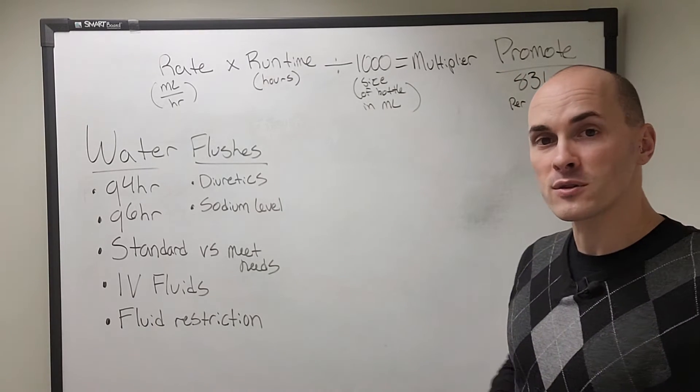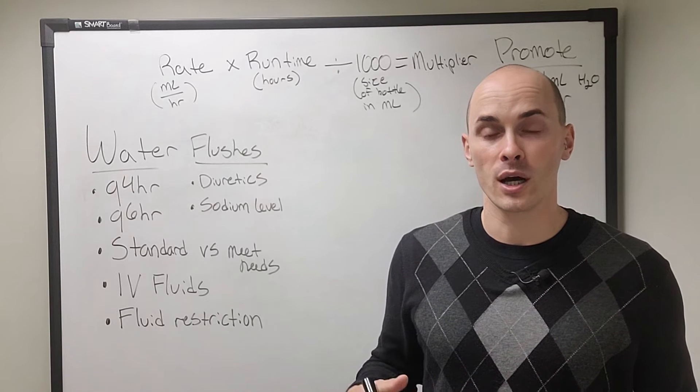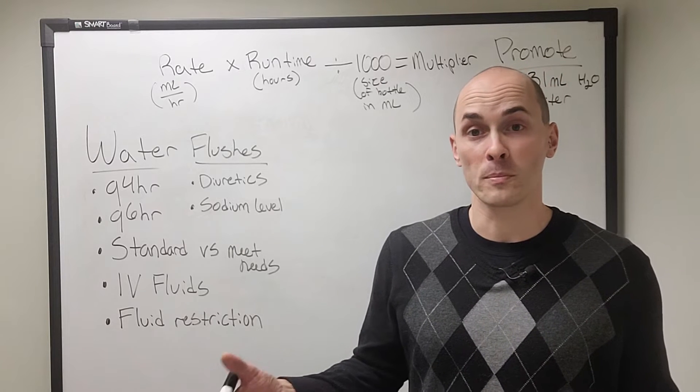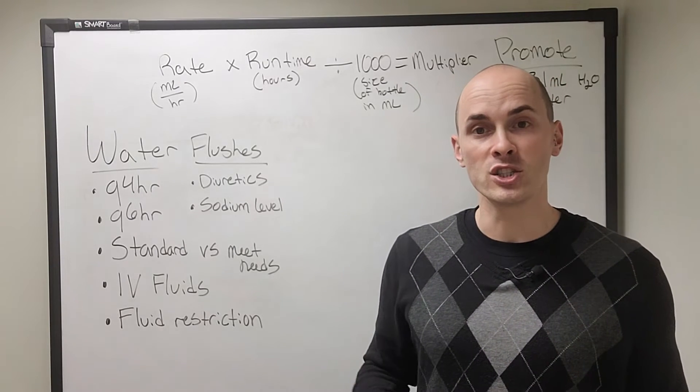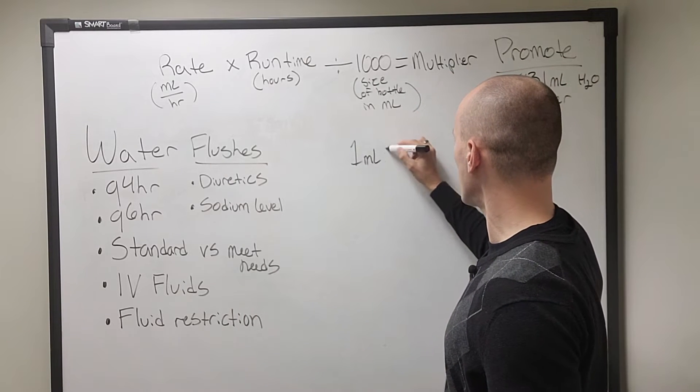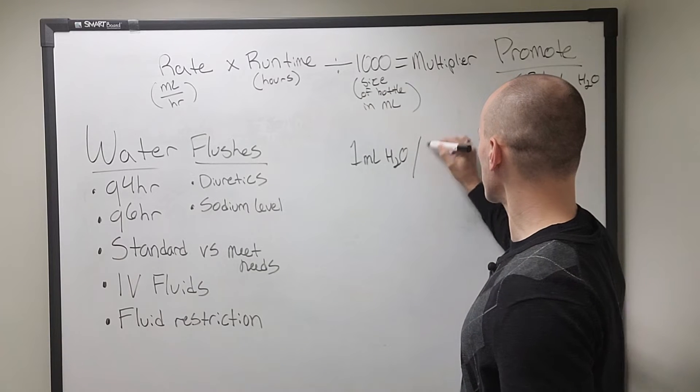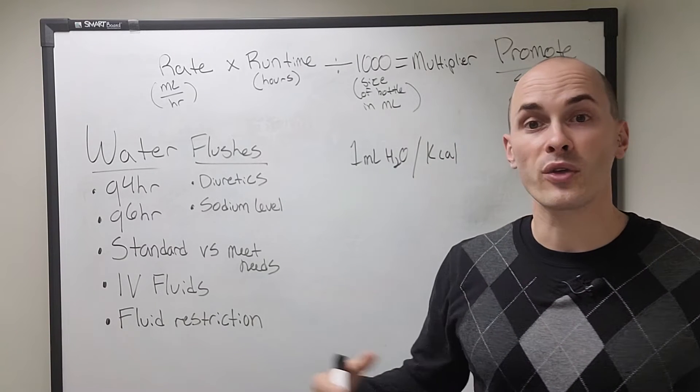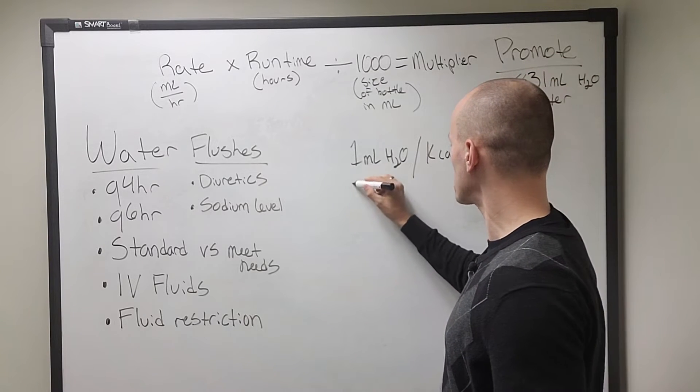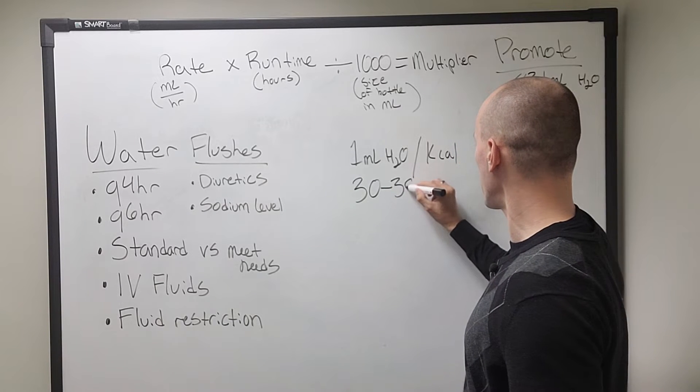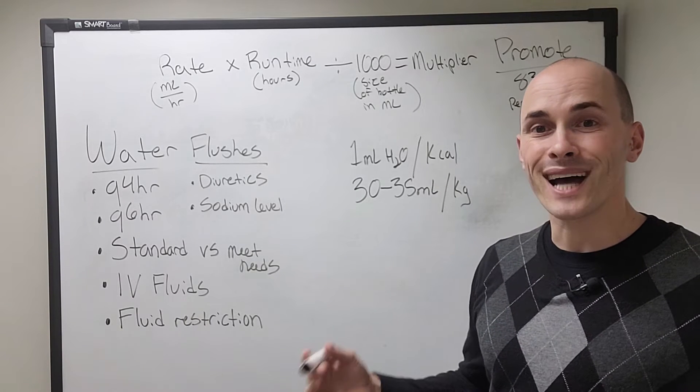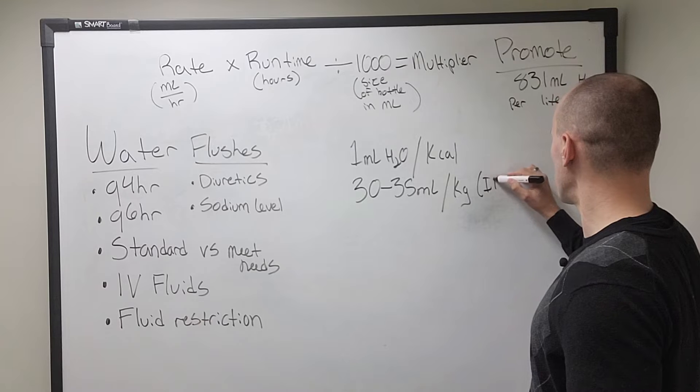First and foremost, in order to figure out how much flushes that you need, you need to figure out how much water your patient needs and there's a lot of different equations that we use for that. Some of the equations could be one milliliter of H2O per kcal. So if your patient needs 2,000 calories a day, you could give them 2,000 milliliters of water. Another estimate would be something like 30 to 35 milliliters per kilogram and you could use ideal body weight.